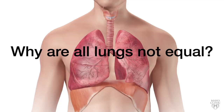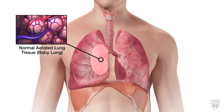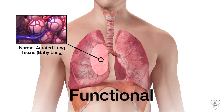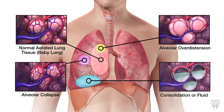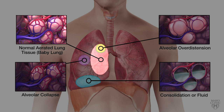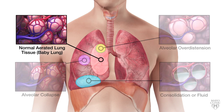Why are all lungs not equal? Because not all disease processes are equal or affect individuals equally. To visualize this, Gattinoni uses the concept of targeting ventilation to the baby lung in ARDS. The portion of lung units unaffected by the disease process causing ARDS is the baby lung — they are still recruitable, functional, have a relatively normal compliance, and effectively participate in gas exchange. The good lung within the total lung is the baby lung, hence the rationale of targeting this smaller functional lung with a low tidal volume strategy.